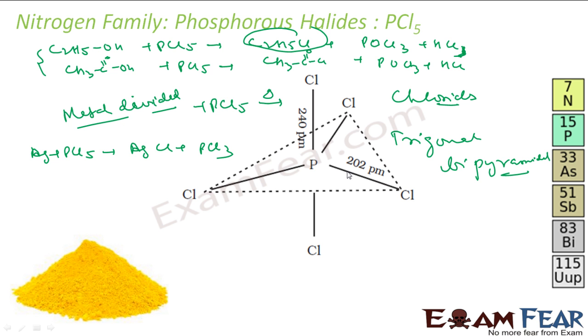This is 240 picometer, this is 202 picometer, this is 90 degrees. Actually, this is trigonal bipyramidal. The axial bonds are longer than the equatorial bonds. Why? Because the axial bonds suffer more repulsion as compared to the equatorial bonds. These axial bonds are longer. Why? Because these axial bonds suffer more repulsion as compared to the equatorial bonds. There is head-to-head, neck-to-neck repulsion here. There is not much neck-to-neck repulsion in the equatorial bonds.